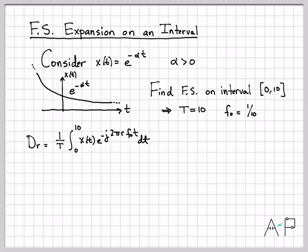In this case, the period is zero to 10. So that is the integral that we need to evaluate. And we can go ahead and start plugging in the particular values of this problem. Capital T is 10. X(t) is e to the minus alpha t. And then we still have our e to the minus j, two pi r f naught t.